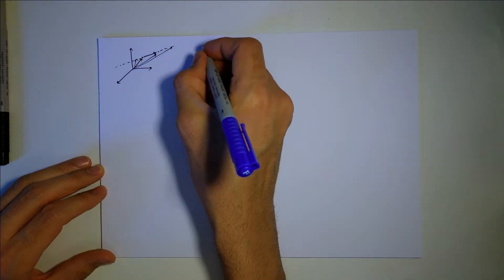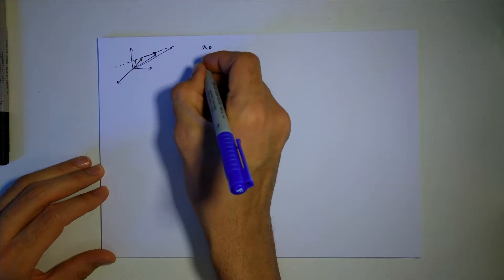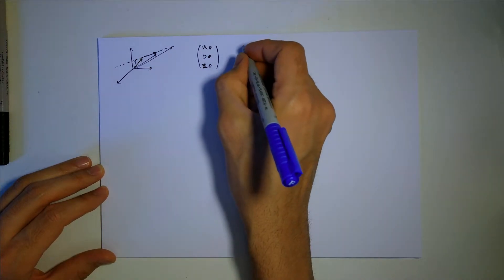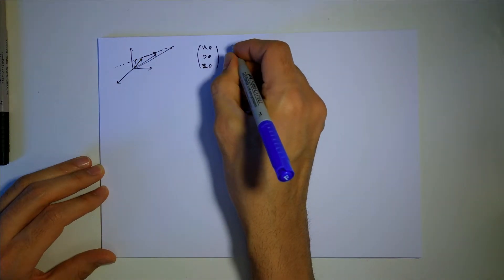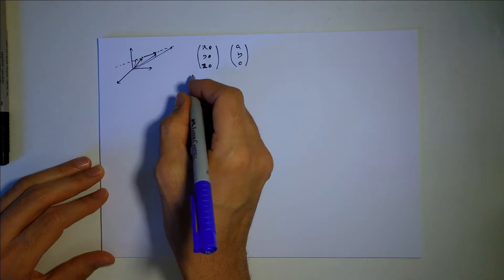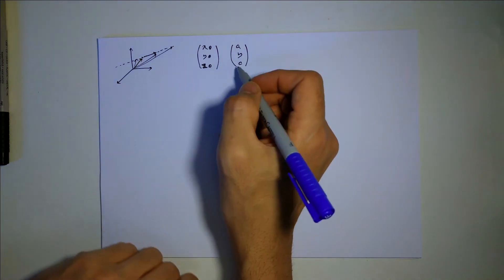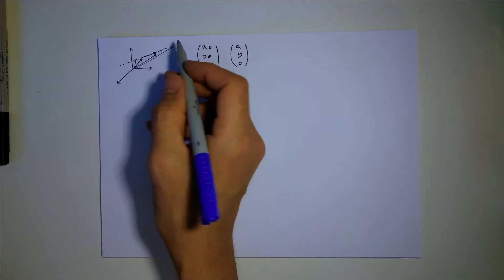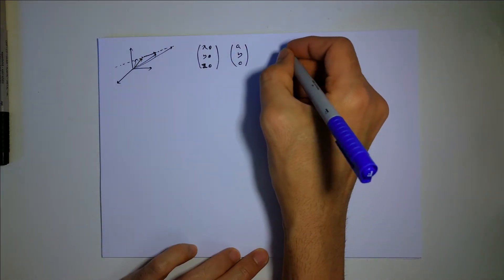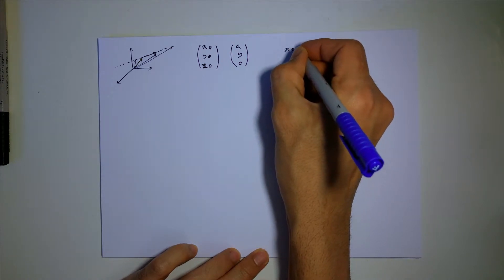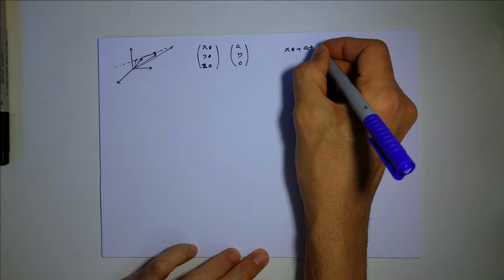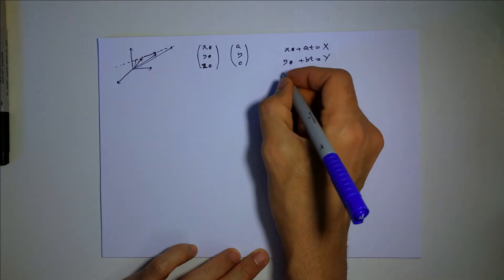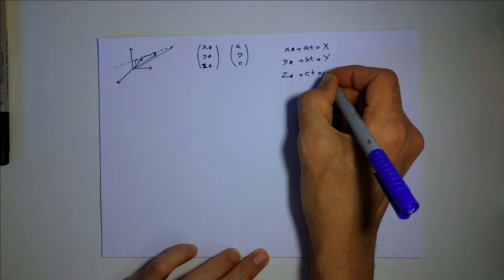So basically you have a point, x zero, y zero, and z zero. And you have a direction, a, b, c. So if I multiply this direction vector and add it up to this point, I will get each one of these single points, which I can write it like this: x zero plus a times t will give me x, y zero plus b times t will give me y, and z zero plus c times t will give me z.